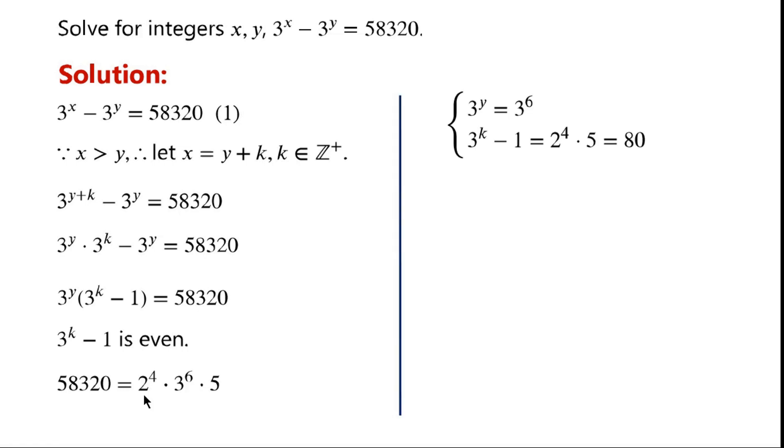2 to the power of 4 times 5 is even, so 3 to the power of y must equal 3 to the power of 6, and 3 to the power of k minus 1 must equal 2 to the power of 4 times 5, which is 80.